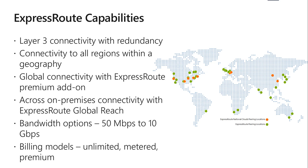ExpressRoute is supported across all Azure regions and locations — even government, Germany, or 21Vianet. The map provides a list of Azure regions and ExpressRoute locations. Azure is located across 54 regions and 140 countries. The ExpressRoute locations refer to where Microsoft peers with those service providers, giving you access to services across all regions within a geographical location, if connected to at least one ExpressRoute location within that region.